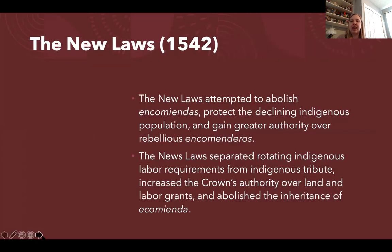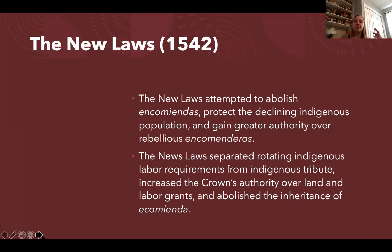One of the sets of laws the Crown passed to protect indigenous people were the New Laws, passed in 1542. They attempted to completely abolish encomiendas — both to protect indigenous peoples, but also to gain greater authority over the encomenderos who were becoming rebellious against the Crown. The New Laws separated indigenous labor requirements from indigenous tribute, increased the Crown's authority over land and labor grants, and abolished the inheritance of encomiendas.